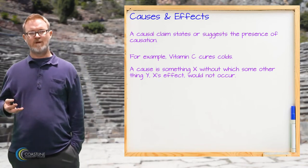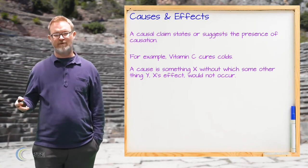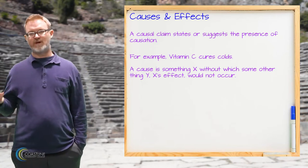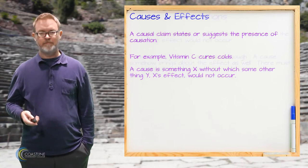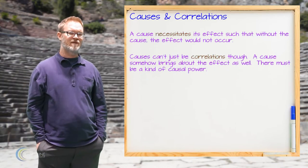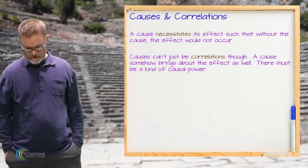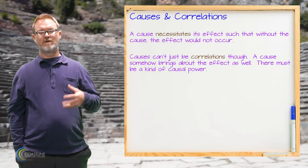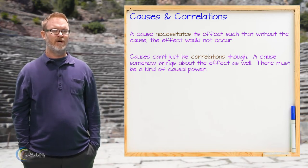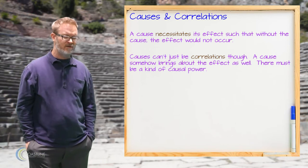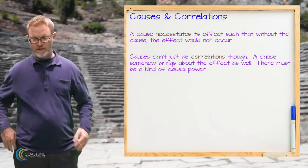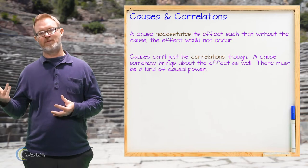We say that a cause is something which produces the effect. It's something without which the effect wouldn't occur. We want to say that a cause somehow necessitates its effect — the cause has a power to produce the effect, a kind of causal power. So a cause can't just be what we would call a correlation. There has to be a kind of causal power underlying the cause to bring about the effect.